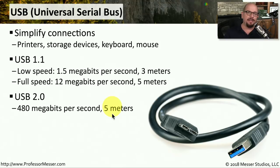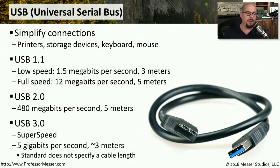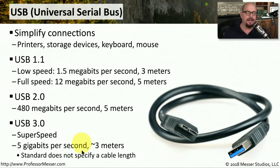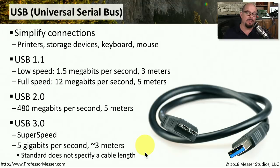One of the latest USB versions is USB 3.0, called super speed USB, because it transmits at 5 gigabits per second on a cable that's about 3 meters in length. The standard for USB doesn't specify an exact cable length, but the signals for USB tend to work to about 3 meters or so.